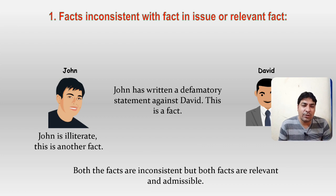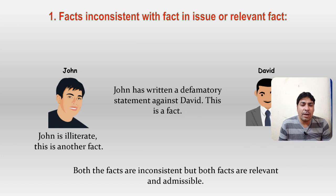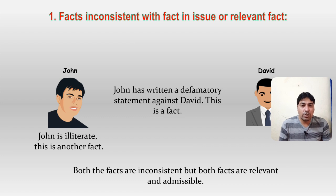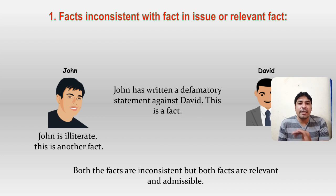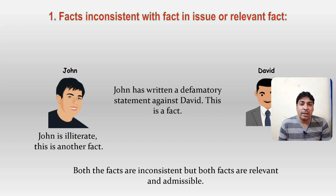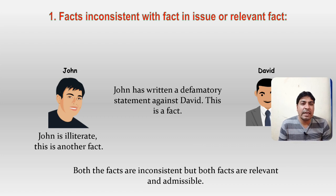The fact in issue here is whether John wrote a defamatory statement against David. Inconsistent with that is the statement that John is illiterate. The fact of John's illiteracy is not otherwise relevant, but it becomes relevant under Section 11 because if his illiteracy is proved, it means John could not have written that defamatory statement. This is the first example.